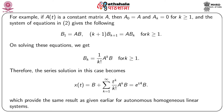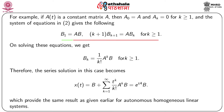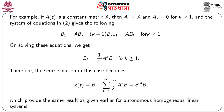For example, if A(t) is a constant matrix A, then A₀ = A and A_k = 0 for all k ≥ 1. The system of equations in (2) then gives b₁ = A·b and b_{k+1} = A·b_k for k ≥ 1. Solving these equations, we get b_k = (1/k!)·A^k·b for k ≥ 1. Therefore, the series solution becomes x(t) = b + Σ_{k=1}^{∞} (t^k/k!)·A^k·b = e^{At}·b, which provides the same result for homogeneous linear systems with constant coefficients.